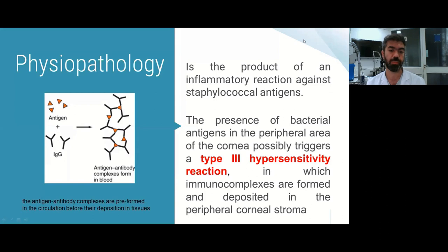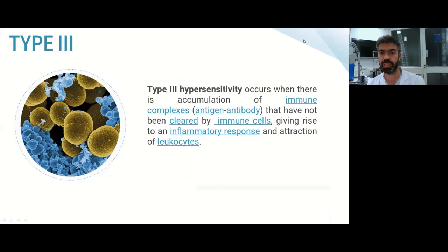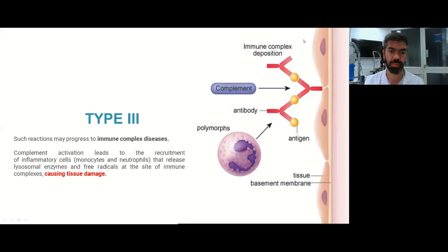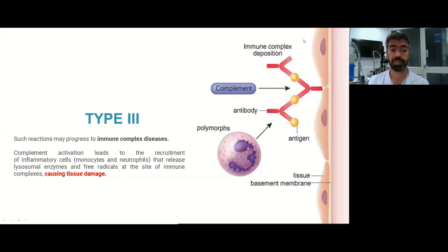The antibodies are preformed in the circulation before being deposited in the tissue. A type 3 hypersensitivity reaction occurs when there is accumulation of immune complex antigen-antibody that has not been cleared by immune cells, giving rise to an inflammatory response and attraction of leukocytes. These reactions may progress to immune complex disease, with complement activation leading to recruitment of inflammatory cells that release lysosomal enzymes and free radicals, causing tissue damage.